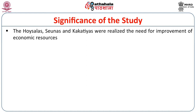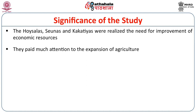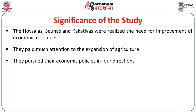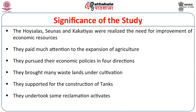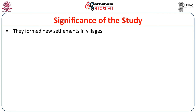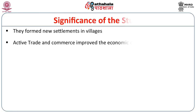The Hoysalas, Sonas, and Kakathias realized the need for improvement of economic resources and paid much attention to the expansion of agriculture. They pursued their economic policies in four directions: first, they brought many wastelands under cultivation; second, they supported the construction of many water tanks; third, they undertook reclamation activities to bring wasteland into cultivable lands; and fourth, they formed new settlements in villages, which led to agrarian changes at the village level. Active trade and commerce improved the economic condition during the Hoysala, Sonas, and Kakathia period.